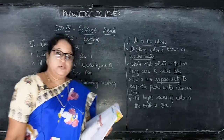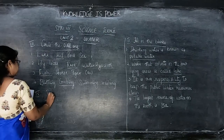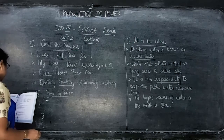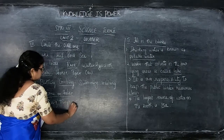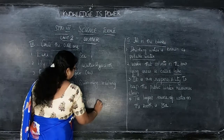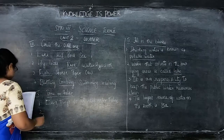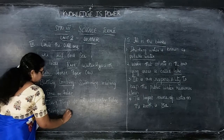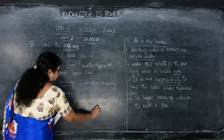That is roman number three. Now we go to true or false. First: living things do not need water — that is false. Second: saving water is a duty — that is true.